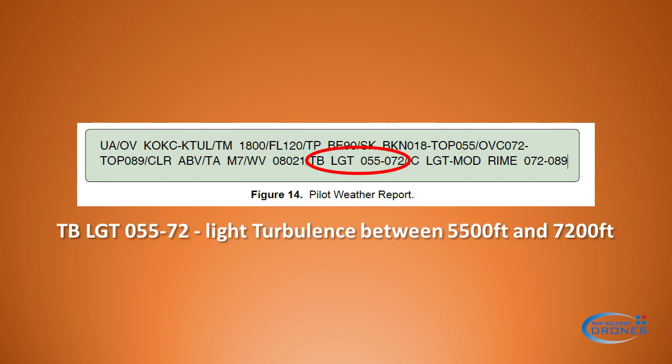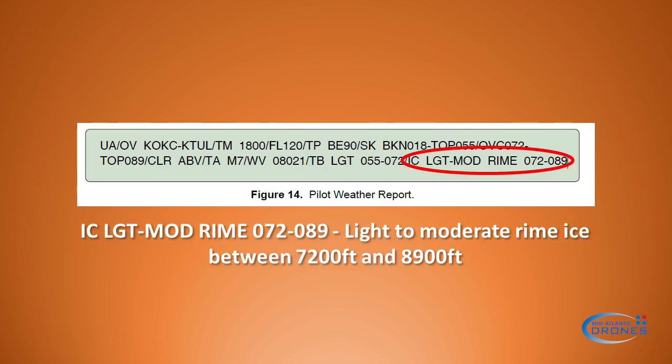Then we have turbulence — 'TB' turbulence. There is light turbulence between 5500 feet and 7200 feet. Then this report talks about ice: light to moderate icing between 7200 feet and 8900 feet.